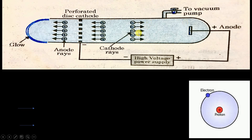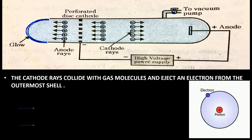We know that cathode rays are emitted by the cathode, and you have hydrogen atoms present in the tube. What happens is that there will be a collision between the cathode rays and the hydrogen atoms. Due to this collision, consider our hydrogen atom, which has one electron in its outermost shell. Due to this collision, that electron will be ejected — that is, removed — from the atom.